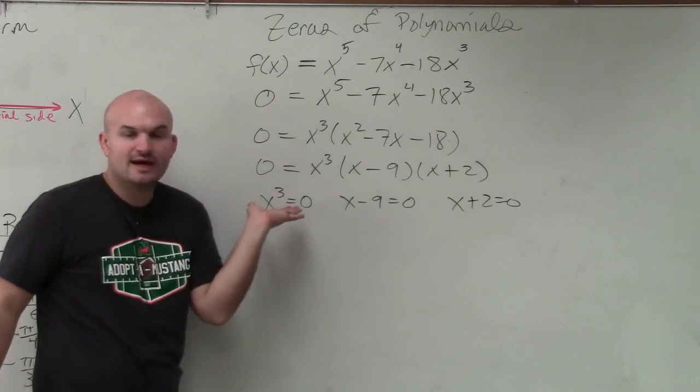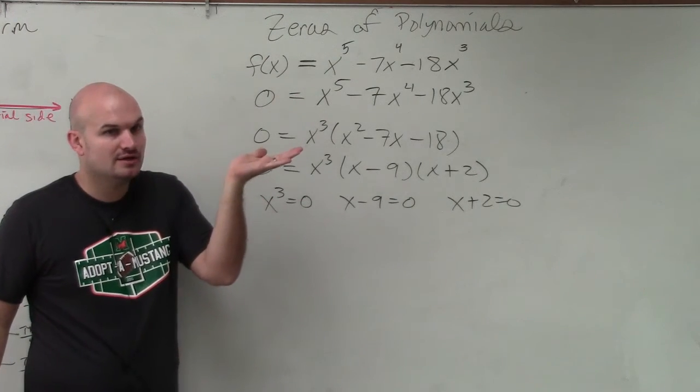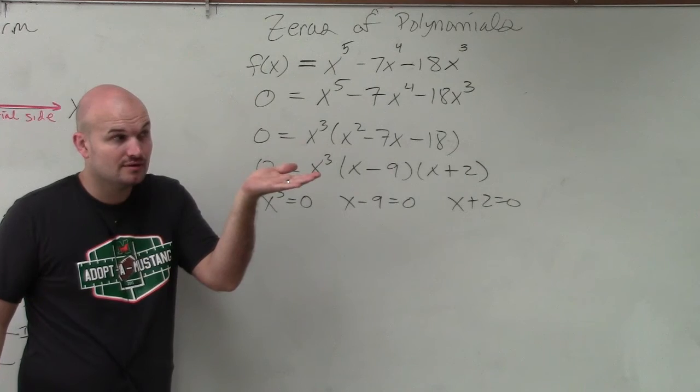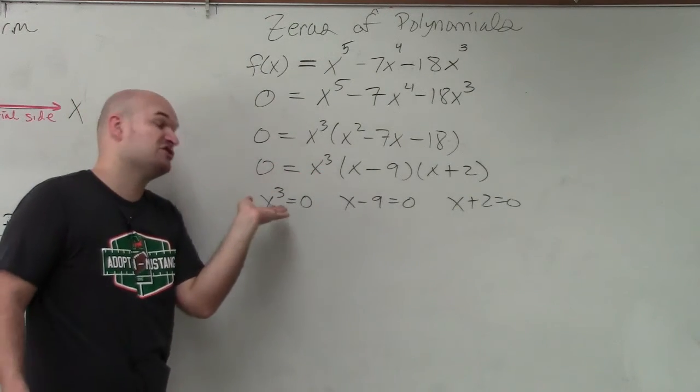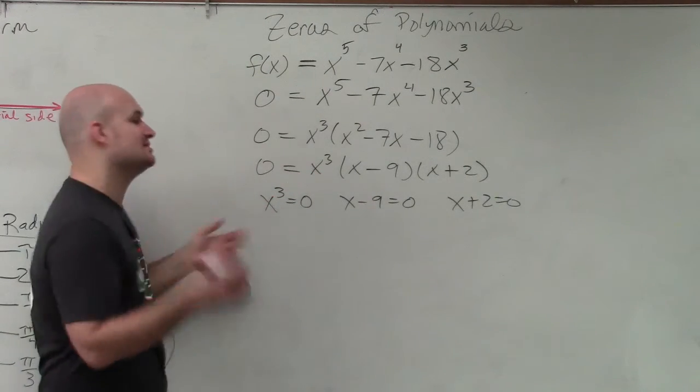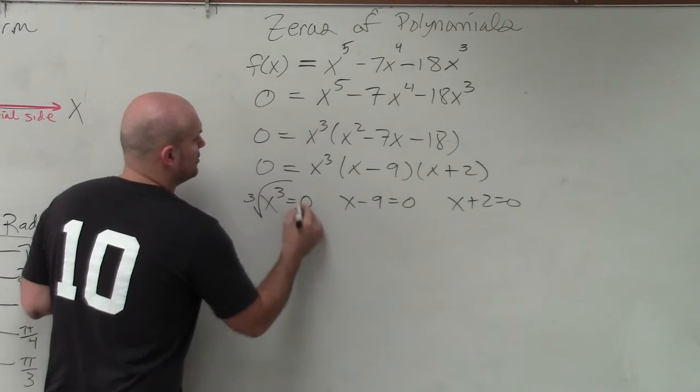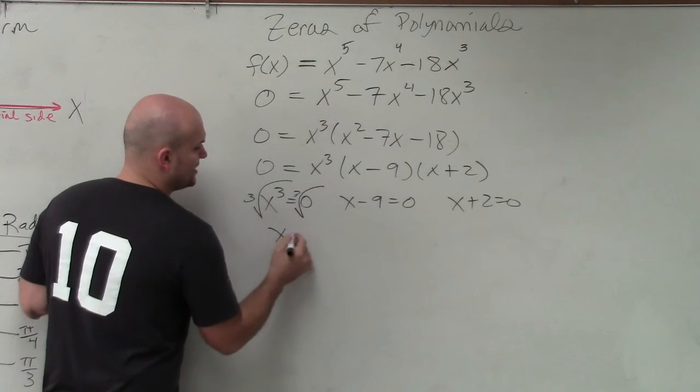Well, guys, how do you undo a number cubed? You take the... Well, if it's squared, you want to take the square root. So if it's cubed, you want to take the cube root. Well, the cube root of 0 is just going to be 0.